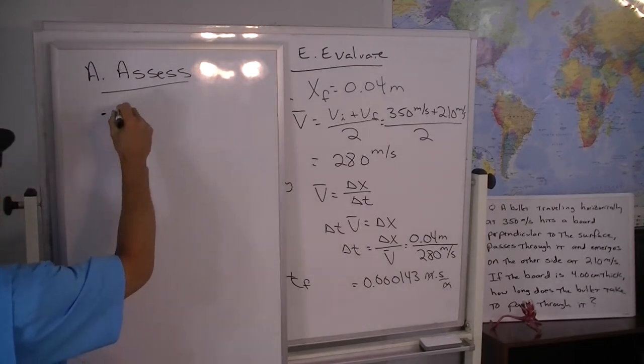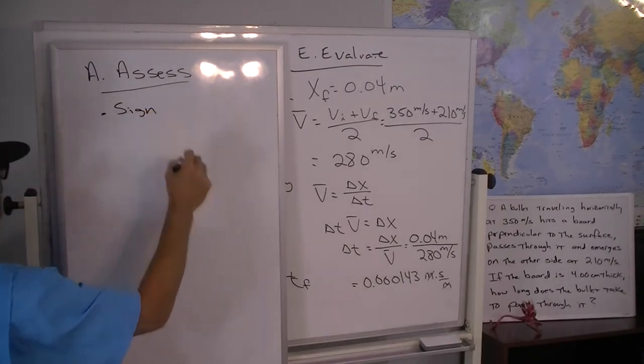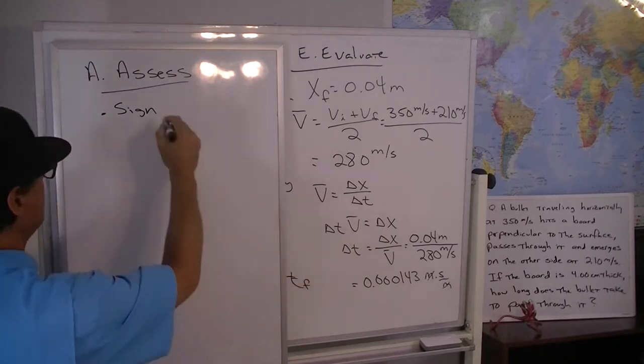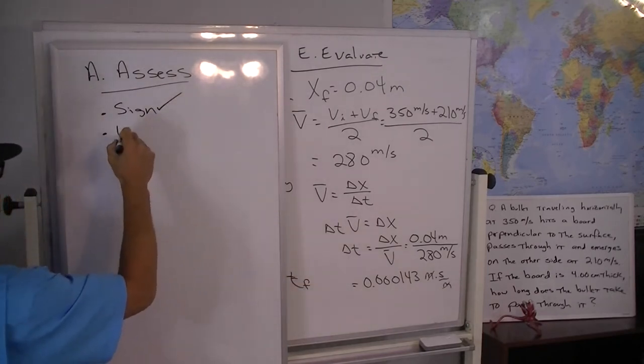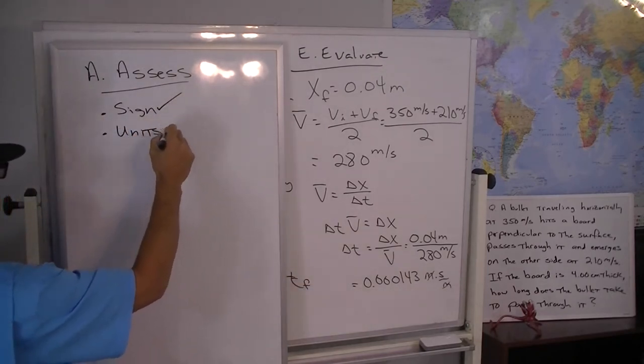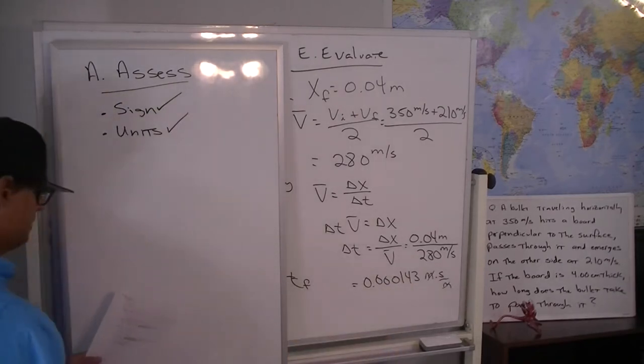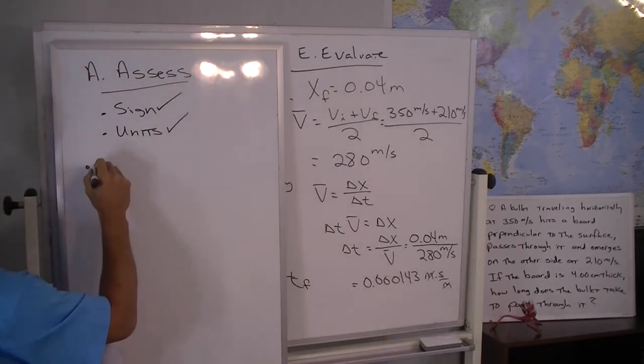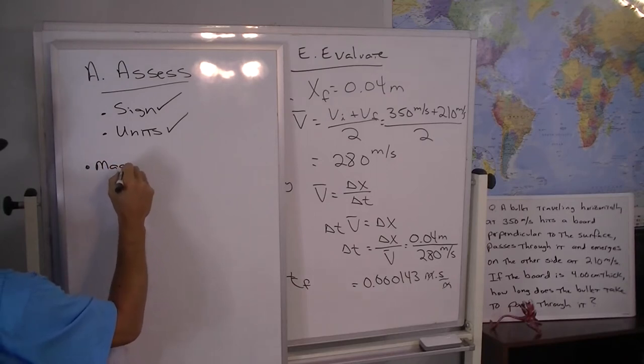We'll check the sign. Sign of the time ends up to be positive as we expected it to be. The units turned out to be seconds as we expected to be. And then what about the magnitude?